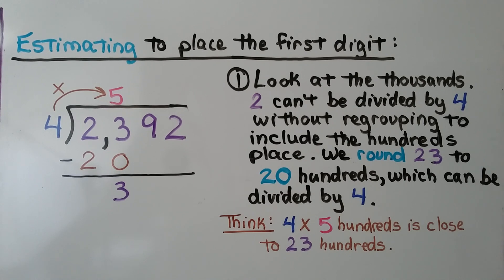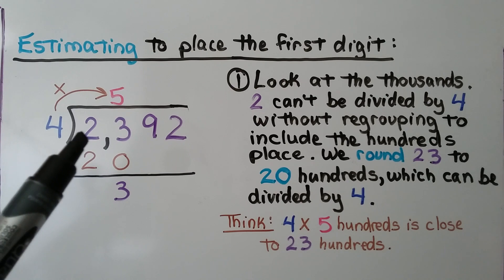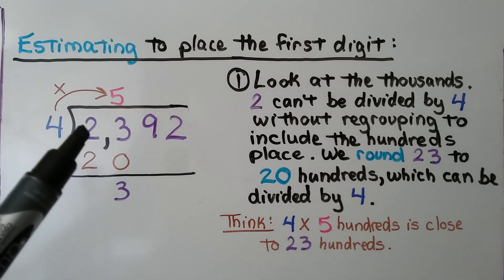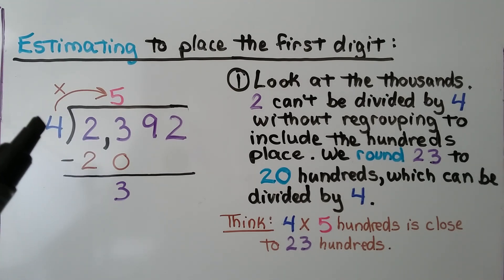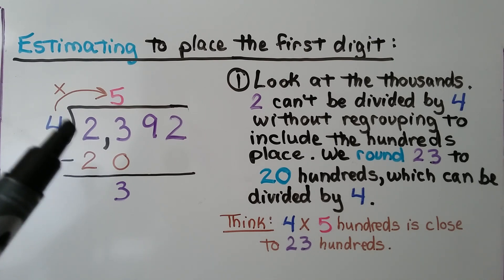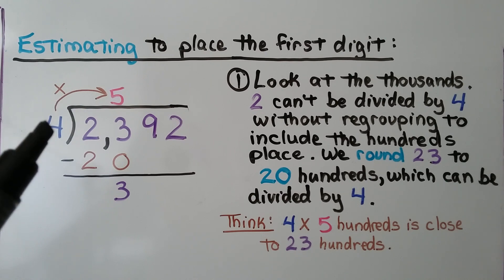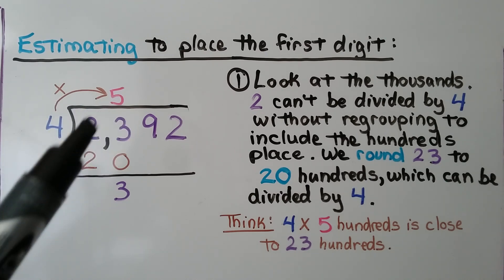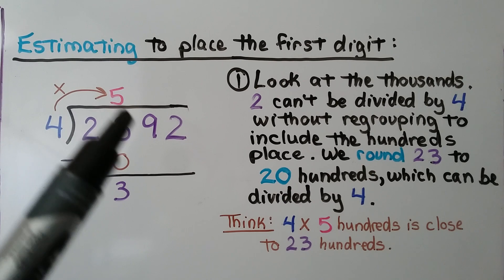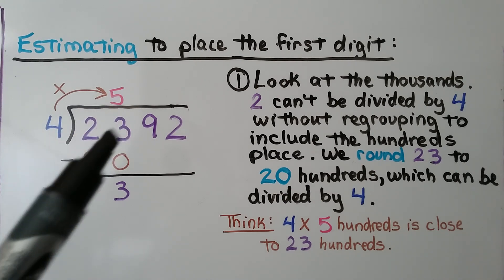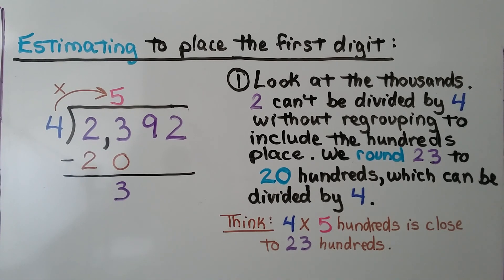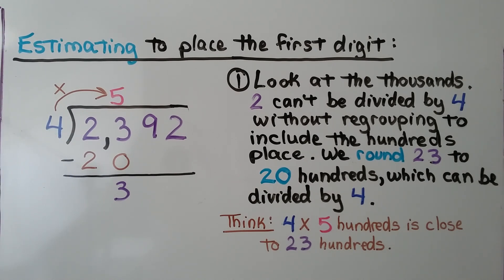For estimating to place the first digit, the first thing we do is look at the thousands place. We have 2,392 divided by 4. Looking at the thousands place, 2 can't be divided by 4 without regrouping to include the hundreds place. We round the 23 to 20 hundreds, which can be divided by 4. 4 times 5 is 20, and 4 times 5 hundreds is close to 23 hundreds.